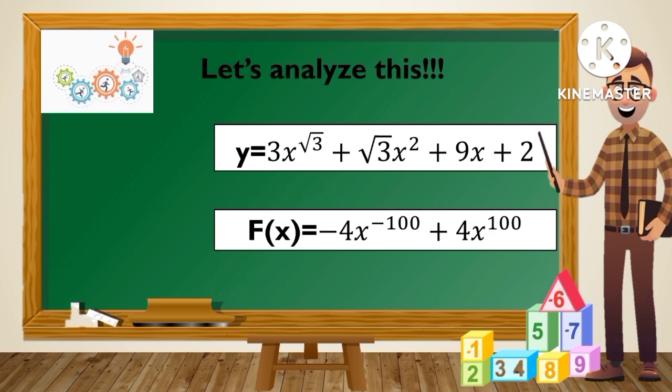Next, y is equal to 3x raised to the square root of 3 plus square root of 3x squared plus 9x plus 2. It is not a polynomial function since it has a radical exponent. And the last one: f of x is equal to negative 4x raised to negative 100 plus 4x raised to 100.